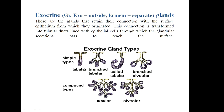There are two types of exocrine glands: simple and compound. Among the simple type of exocrine glands we find tubular, branched tubular, coiled tubular, and branched alveolar. In the compound type we find tubular and alveolar types.